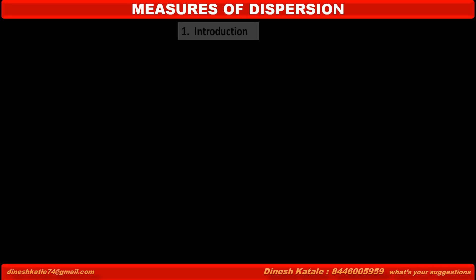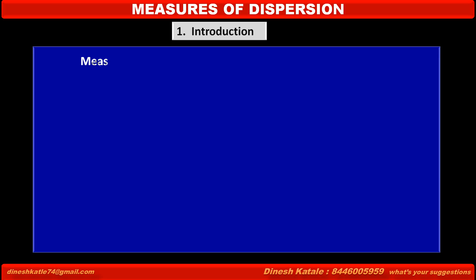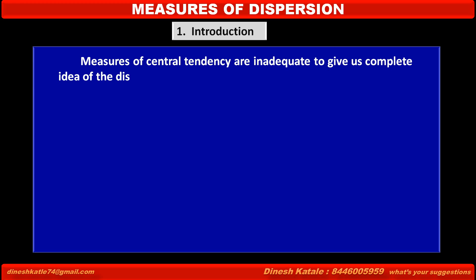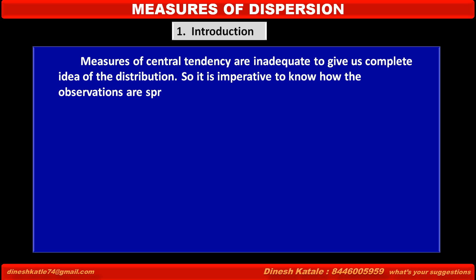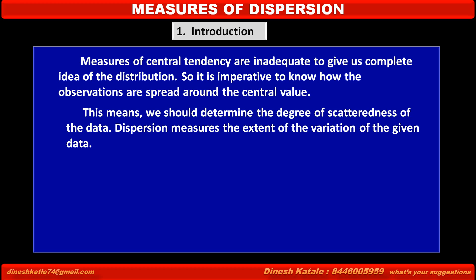Now we have to learn Measures of Dispersion. First, see the introduction. Measures of Central Tendency are inadequate to give us a complete idea of the distribution, so it is imperative to know how the observations are spread around the central value. This means we should determine the degree of scatteredness of the data. Dispersion measures the extent of the variation of the given data. In this chapter we shall study the following measures of dispersion.